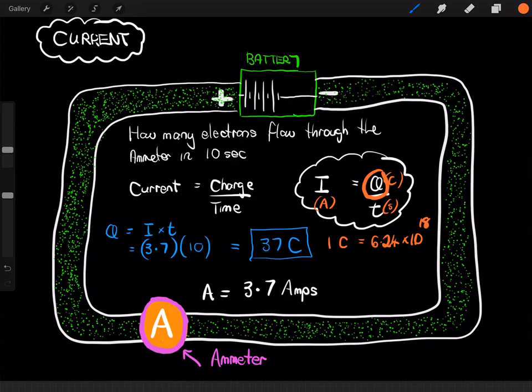So, to work out the number of electrons, number of electrons equals the number of Coulombs, or the charge, Q, in Coulombs, multiplied by 6.24 times 10 to the 18.